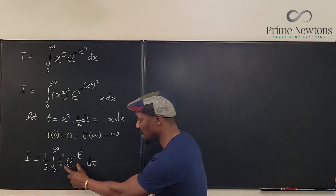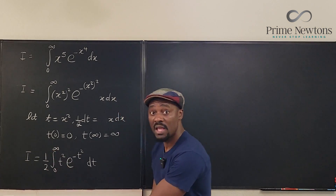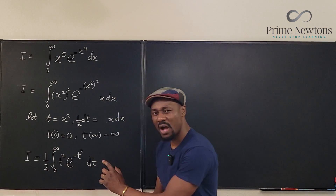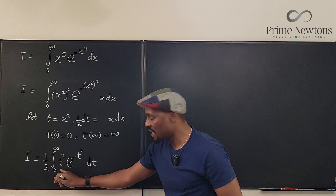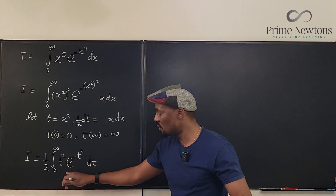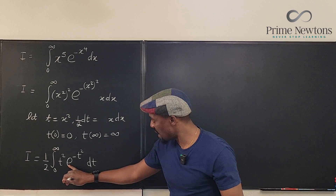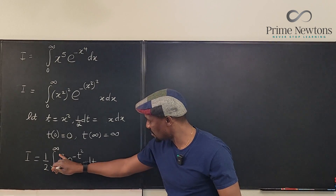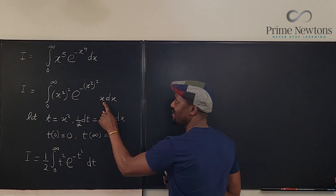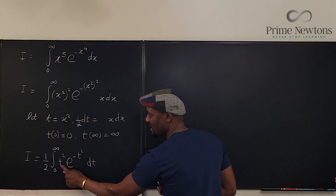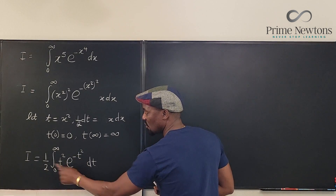I'm going to ignore the bounds for now and just integrate this. Well, if you split this you can do integration by parts. We're going to split t² into t times t, so that the derivative of one t will be one — making the IBP work. Just like I split the original integrand, I'm going to split this into t and t so that the derivative of one gives us the other factor.